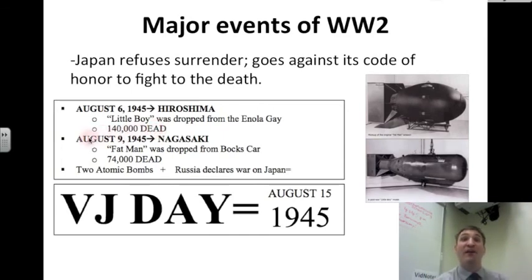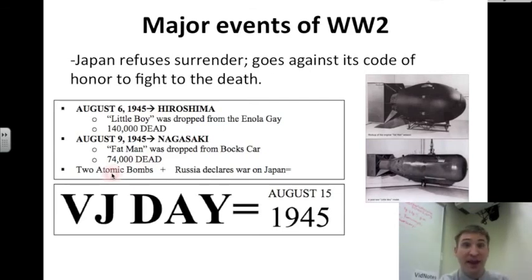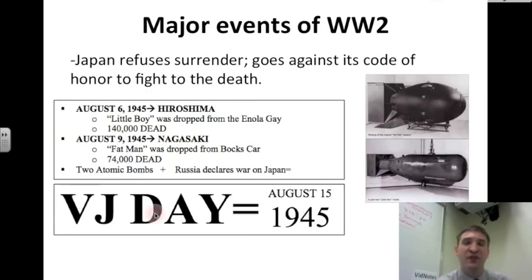Three days later, the U.S. drops a second atomic bomb on August 9th onto the city of Nagasaki. That bomb is called Fat Man and it's dropped from a plane called Boxcar. 74,000 Japanese die in this bombing. So we have two atomic bombs dropped on Japan, and Russia declares war on Japan. VJ Day — Victory in Japan Day — is inevitable, when the Japanese finally surrender on August 15th, 1945. And World War II comes to a close.